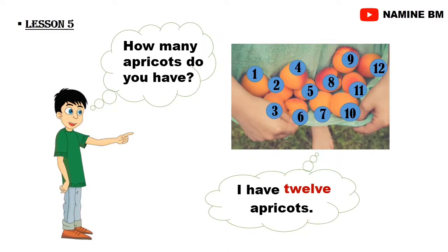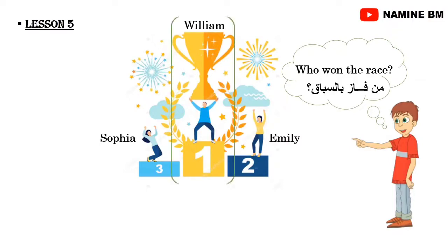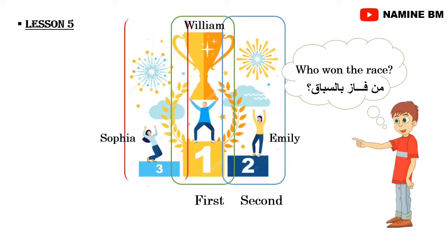Here we have William, Sophia, and Emily. Who won the race? William won the race, so William is the first, Emily is the second, Sophia is the third.